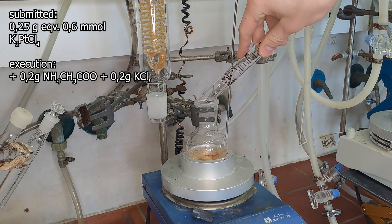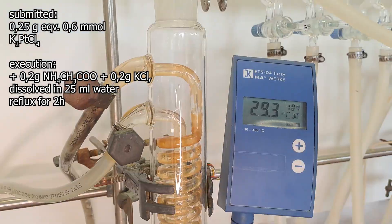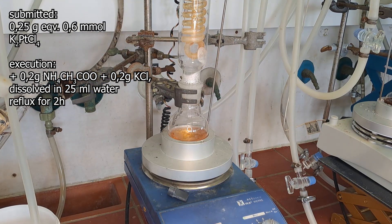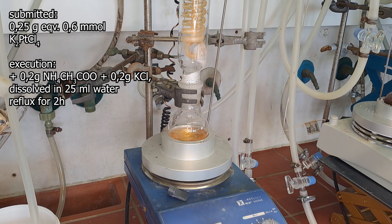Then 25 milliliters of water is added. Over the next two hours, it's mixed at reflux. You can clearly observe a color change from the reddish tetrachloroplatinate to yellow cisplatin.